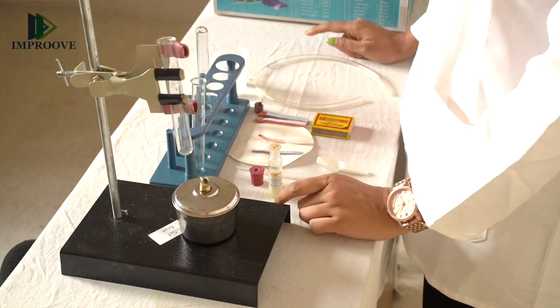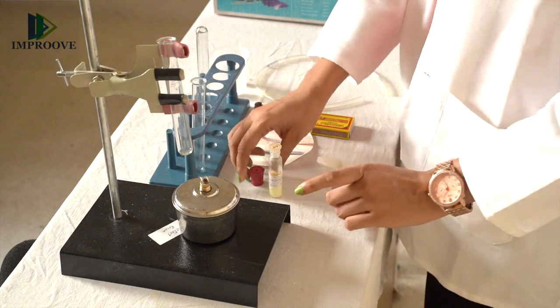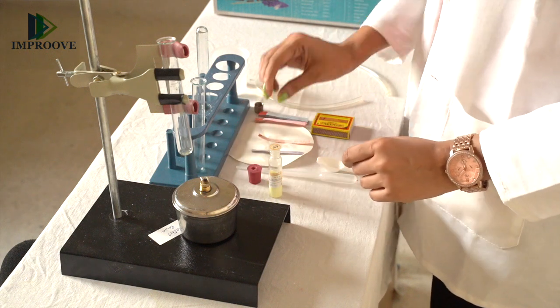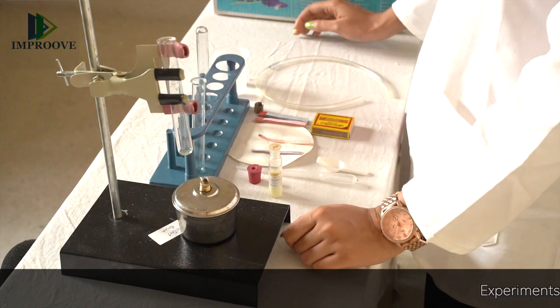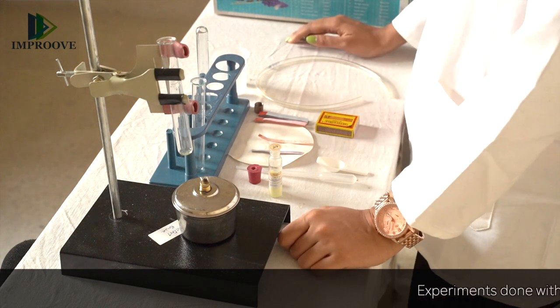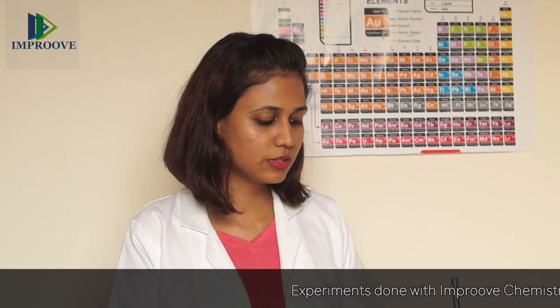You will also need powdered sulphur from your lab kit, a cork with a hole, a delivery tube, a dropper, a measuring spoon, and red and blue litmus paper along with some water.